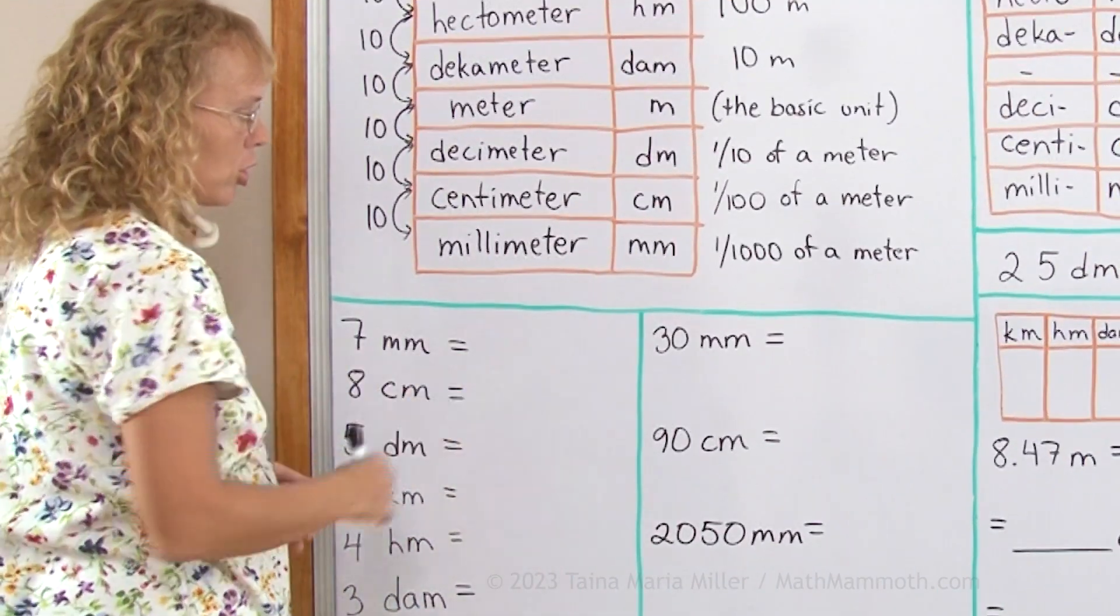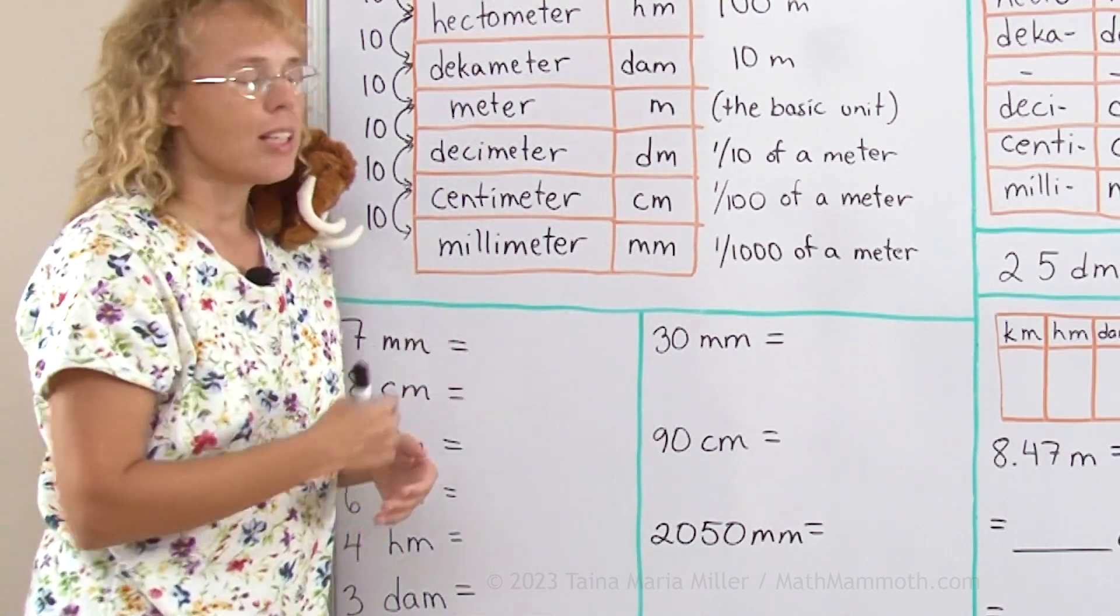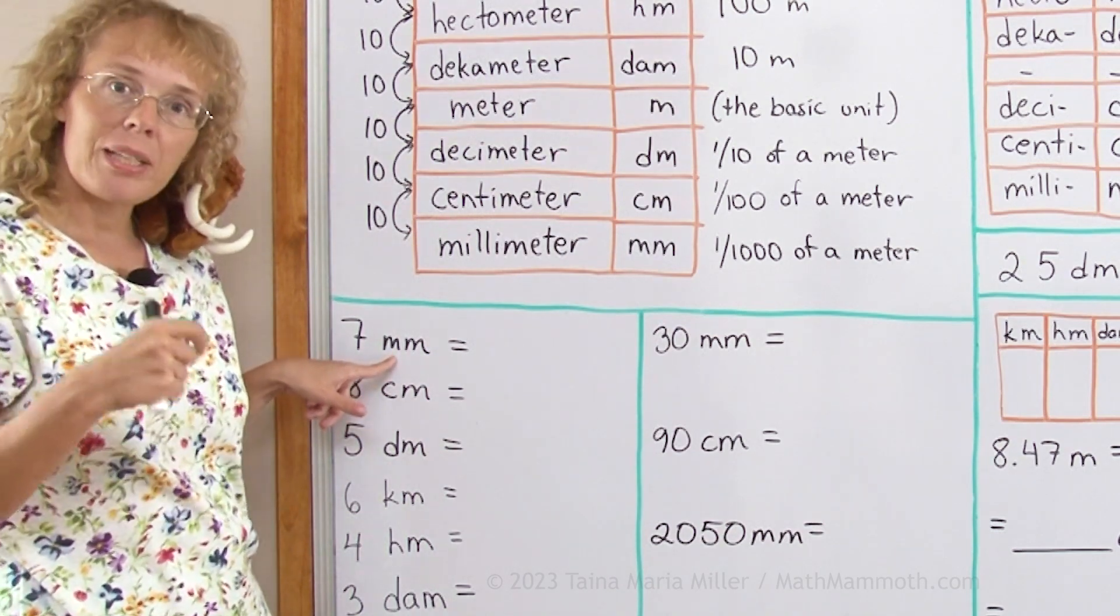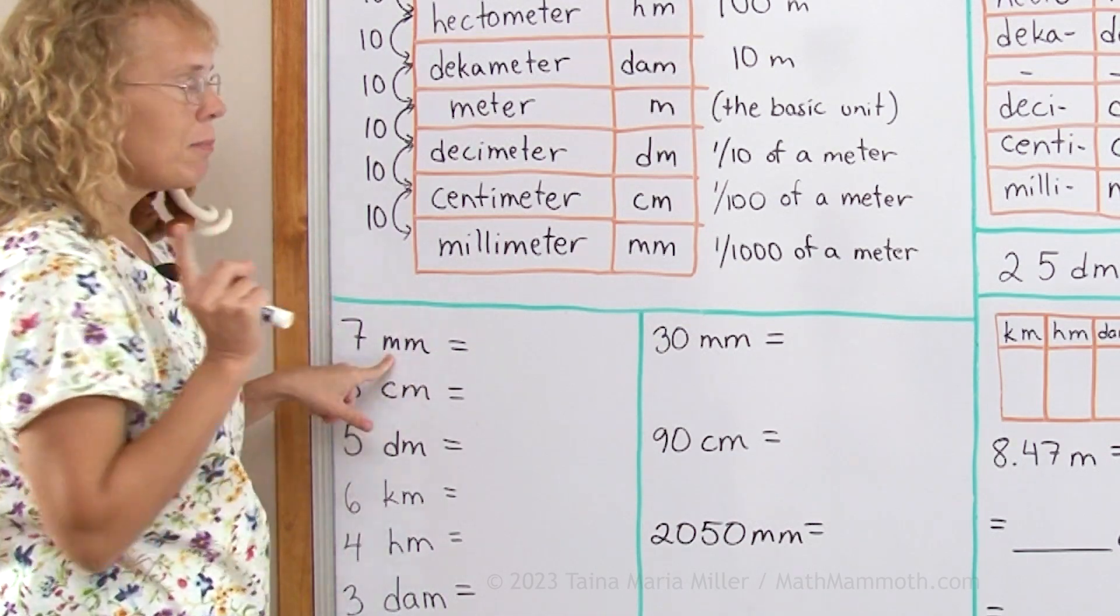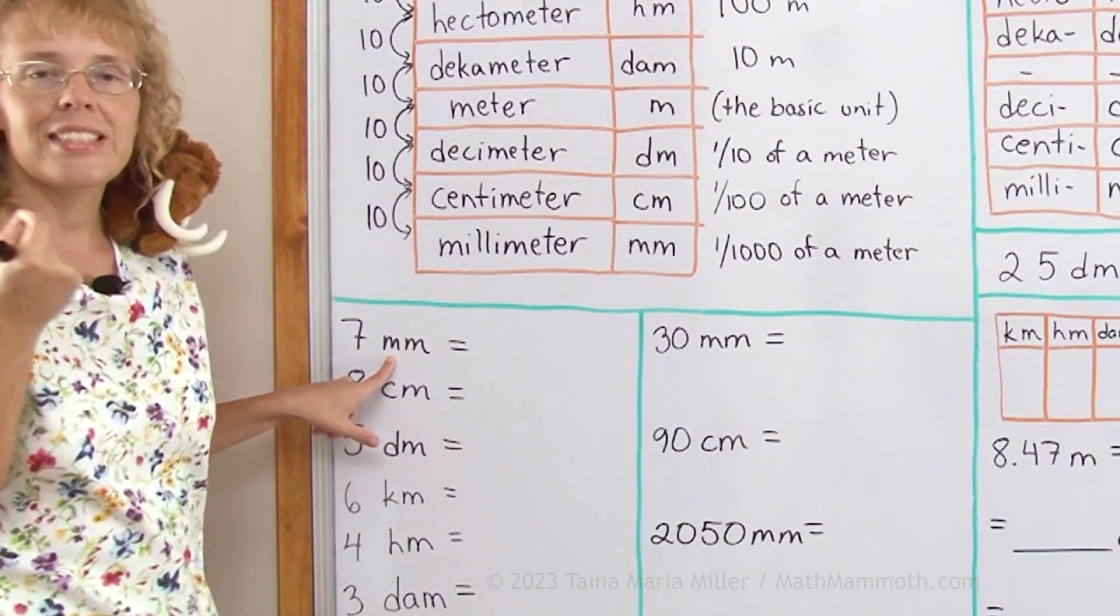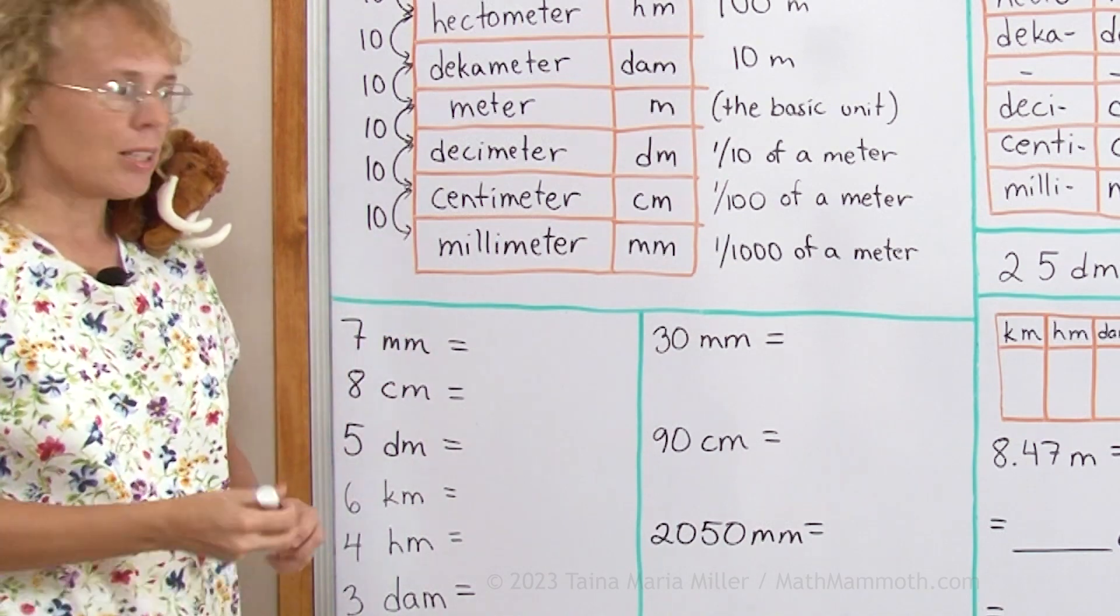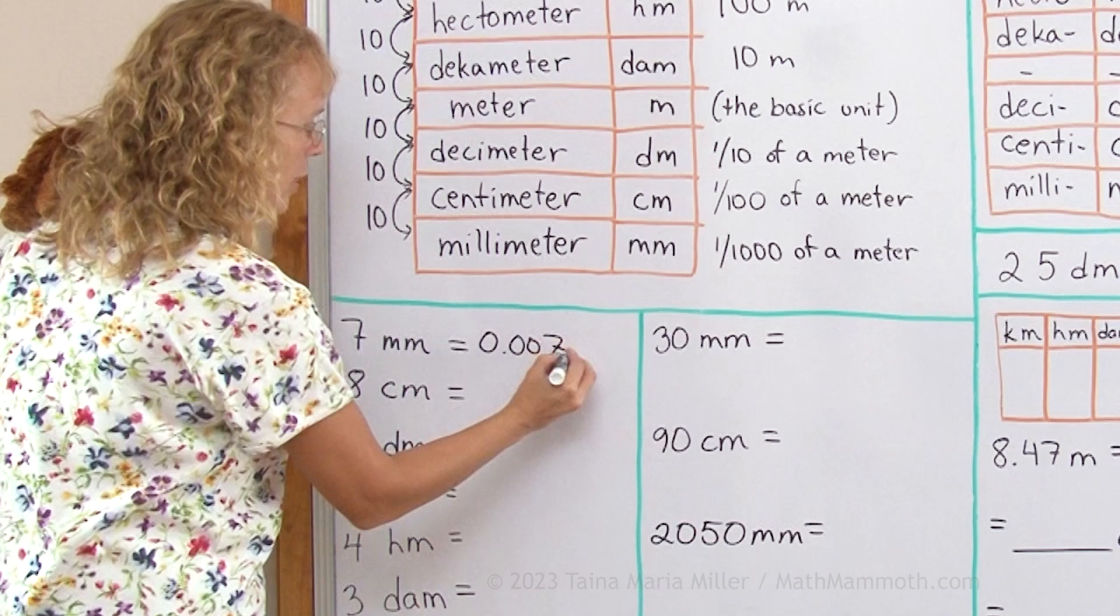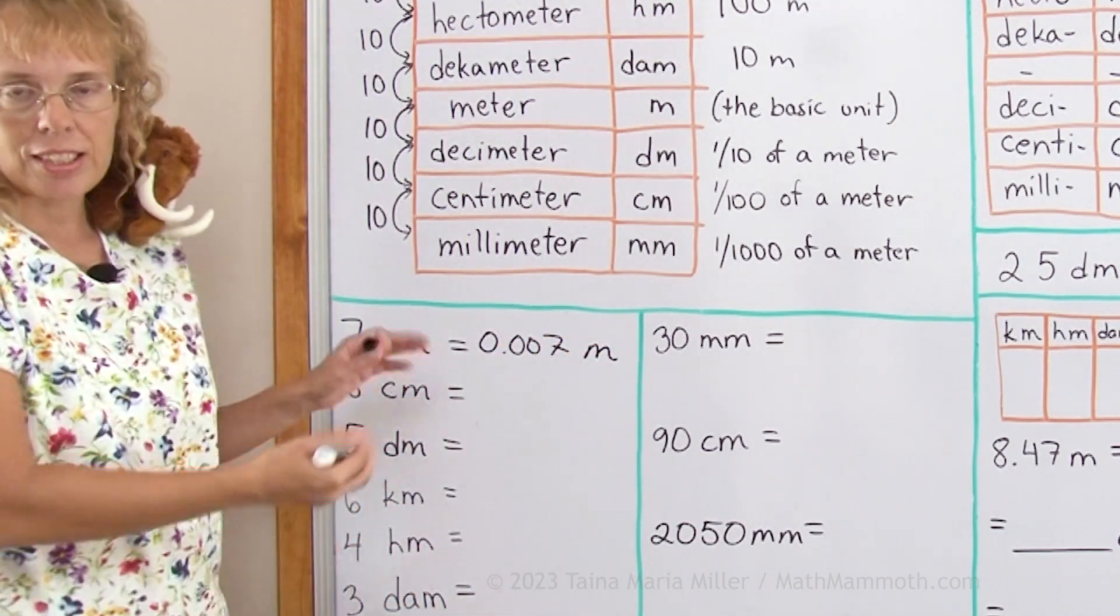Let's do some conversions. Each one of these is going to be converted into meters, to the basic unit. And for that we can think of this prefix here and what it means. For example, seven millimeters. Milli means one-thousandth. So seven milli would mean seven-thousandths. Seven-thousandths is a decimal number, so we just write it here: 0.007 meters. That's how the conversion went.